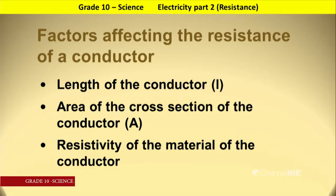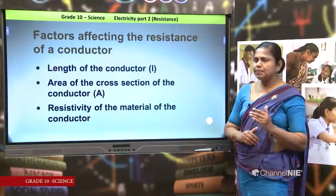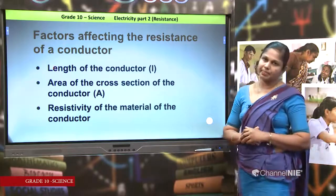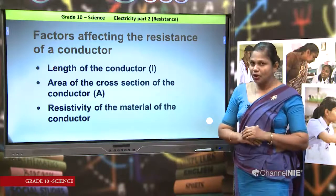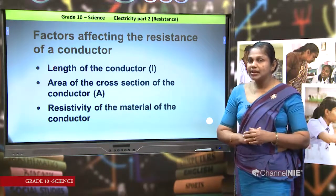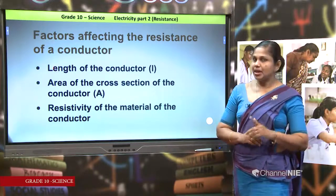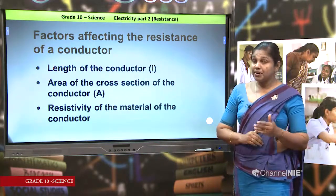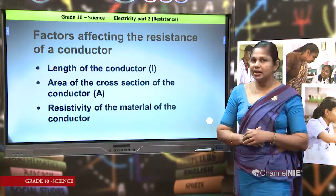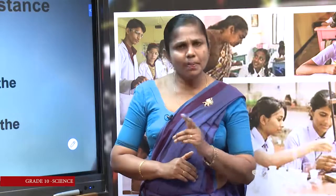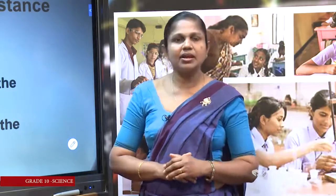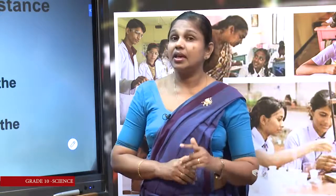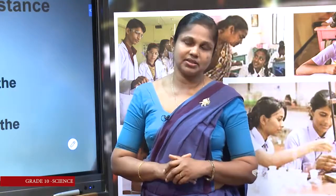The factors affecting the resistance of a conductor are: first, the length of the conductor; second, the area of cross-section of the conductor; and third, the resistivity of the material. Resistivity depends on the material composition of the conductor. Nichrome has a greater resistivity and therefore provides a high resistance. Copper has a low resistivity and therefore provides low resistance when connected in circuits.